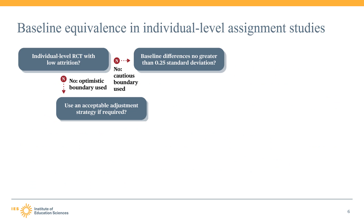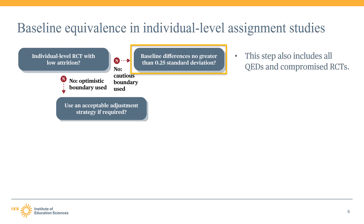Let's discuss the two ways that the WWC assesses baseline equivalence. First, the right path: the WWC requires all QEDs, all compromised RCTs, and all RCTs with high risk of bias due to compositional change to establish equivalence between groups on observable characteristics. These studies are eligible to receive a research rating of meets WWC standards with reservations at best, since they can only demonstrate equivalence on observable characteristics and we don't know how much the groups may differ on unobservable characteristics.